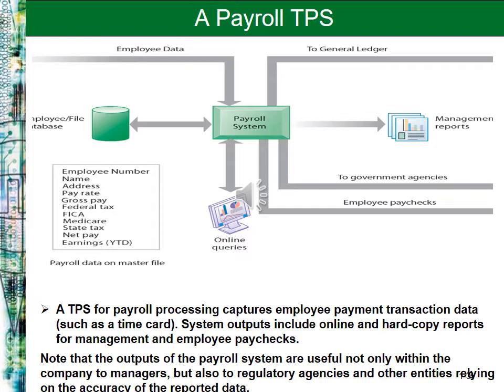An example of a Transaction Processing System is the payroll system. The payroll system processes data on payments to employees, and in addition to helping company managers, it facilitates the work of regulatory agencies and other entities relying on the accuracy of the reported data.